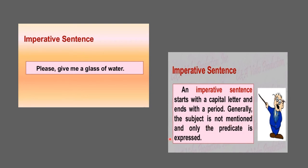Generally in an imperative sentence, the subject is not mentioned — only the predicate is expressed. For example, 'Please give me a glass of water' — you have not mentioned 'you' or a name. The predicate is 'give me a glass of water.' Similarly, 'Open the door' or 'Close the door' — the subject is not mentioned, only the predicate. So these are imperative sentences.